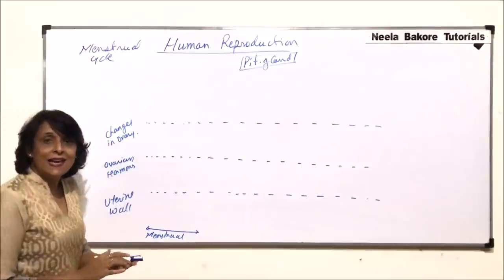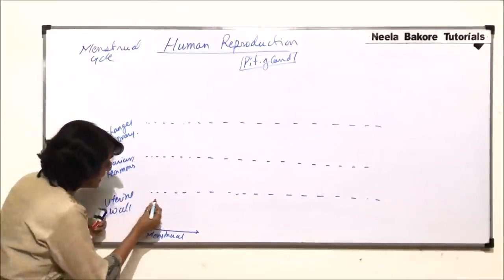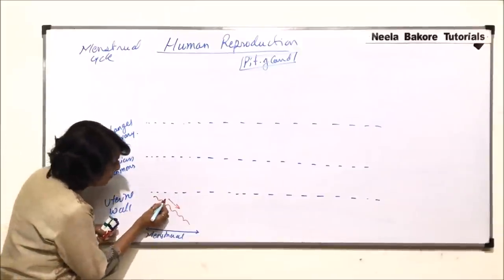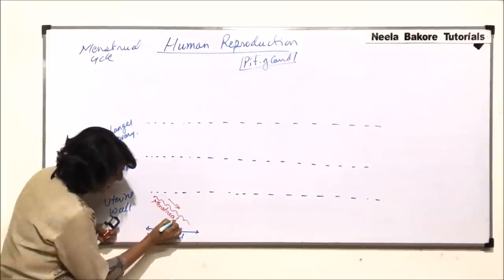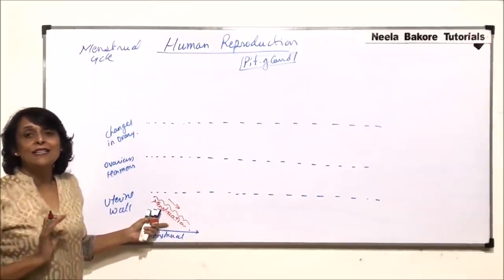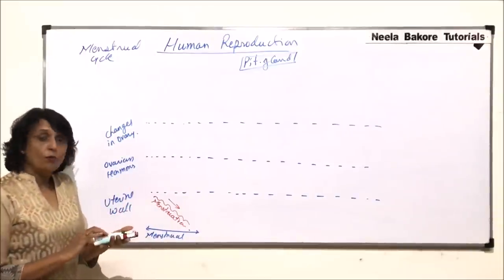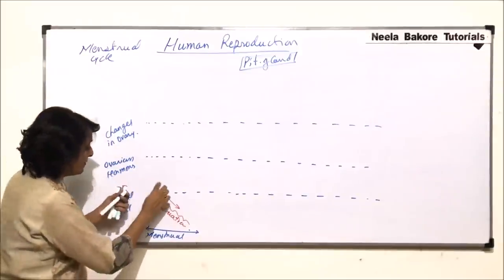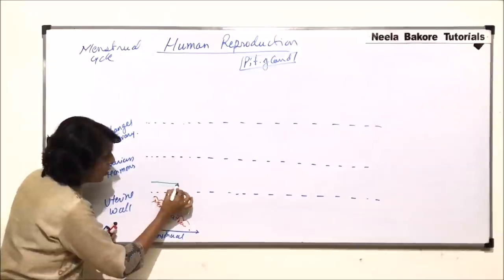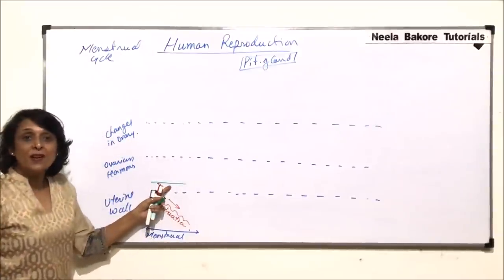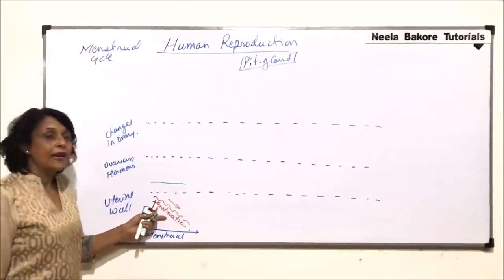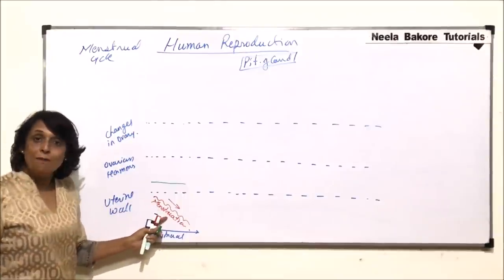During the menstrual phase, the endometrial lining is lost — this is known as menstruation. Menstruation takes place when the progesterone level is very low. Progesterone is the hormone produced from the corpus luteum. This green line represents the lowest level of progesterone. When progesterone level falls, the endometrial lining is lost in the form of menstruation.